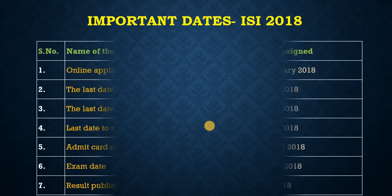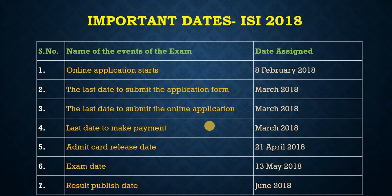The very important dates: 8 February 2018, the online application would be starting. In March are the tentative dates of the last year of submission and the online application and payment options will be on their website very soon. The admit card releasing date will be 21st of April.